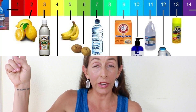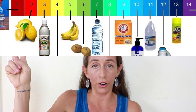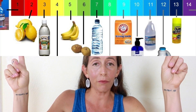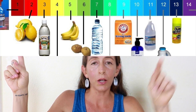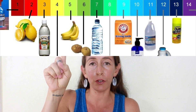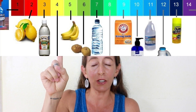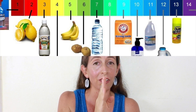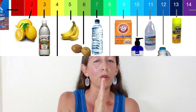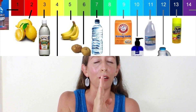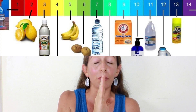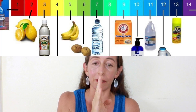Over here at 3, we have vinegar. Over here at 9, we have baking soda. Move a little further to 5 and you've got bananas. Move a little bit further to 7 — like we said, neutral — and you have water and the pH of your internal body.